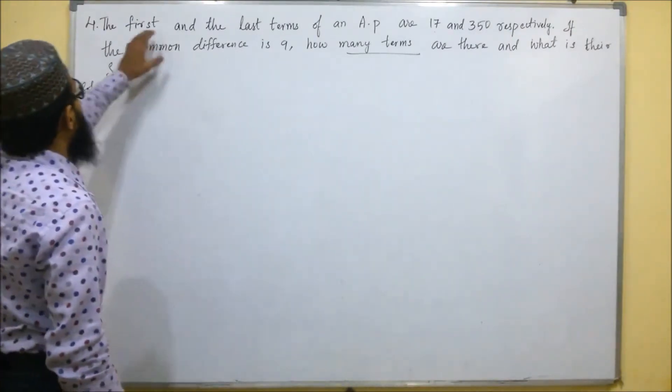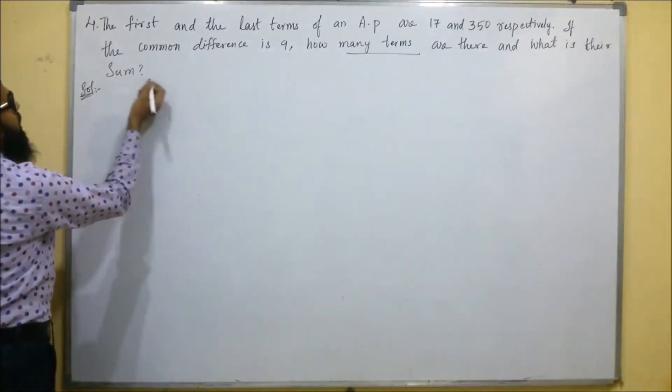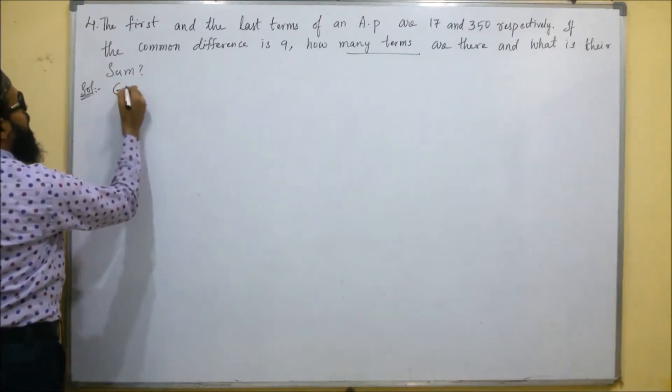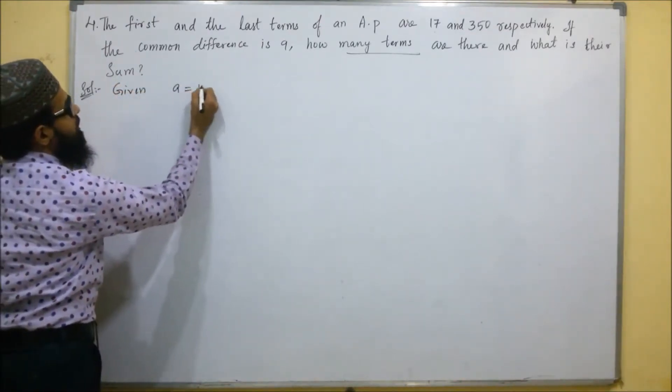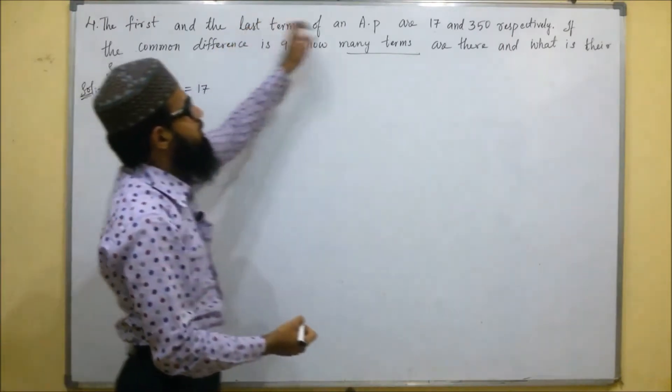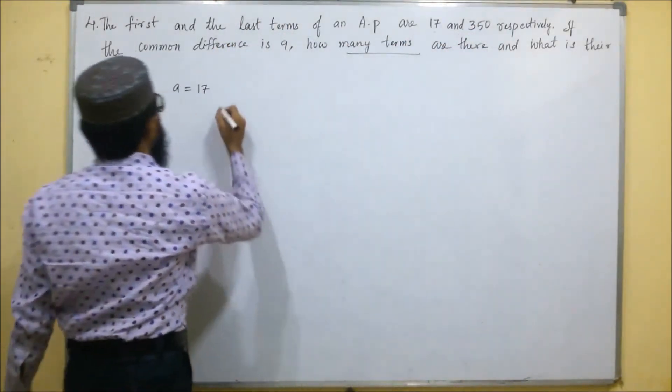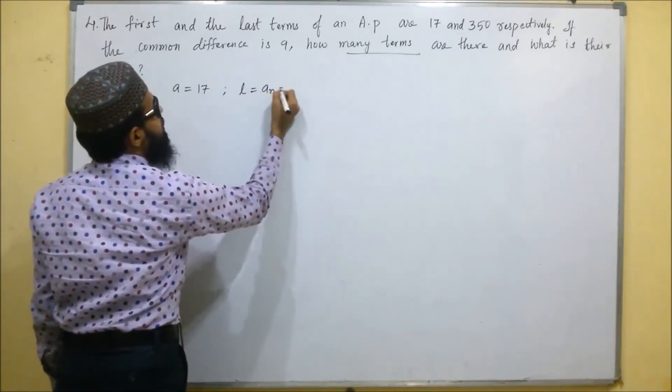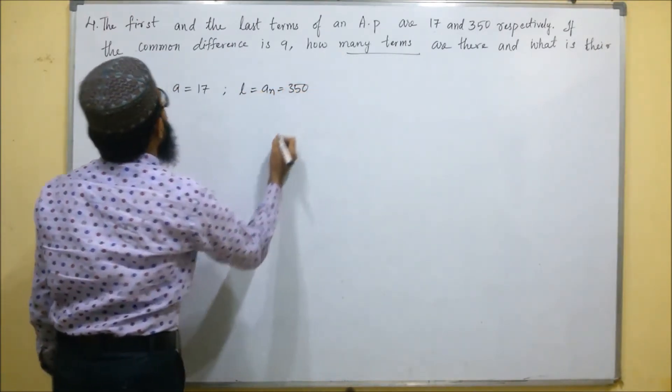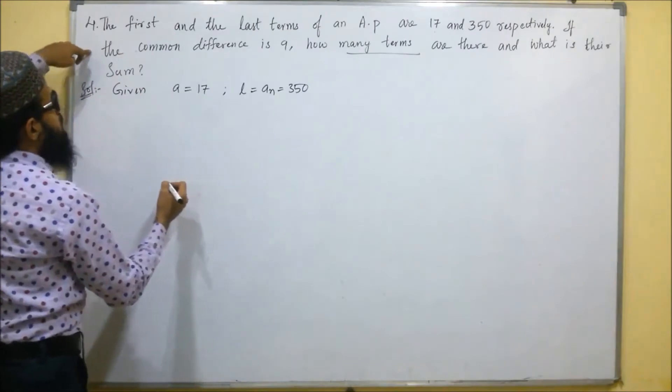We will start with the solution. What is given in this AP? Given first term is 17 and the last term is 350, last term means that will be L or AN, that is 350 and the common difference is 9.